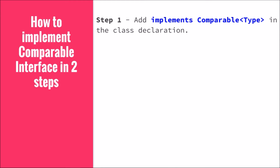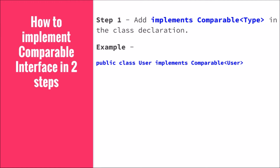Step number one is you have to add 'implements Comparable' and the type in the class declaration. For example, we have 'public class User implements Comparable<User>'. The type 'User' means this Comparable interface will be used to compare User objects. You just have to say 'implements Comparable' and the type of the class.